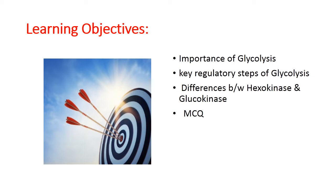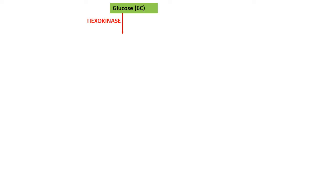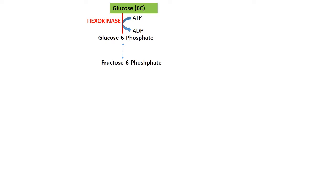Glycolysis also serves as a source of glycerol and carbon skeletons of non-essential amino acids. Now, the steps of glycolysis: in the first step, six-carbon glucose is phosphorylated to glucose-6-phosphate via the enzyme hexokinase. In this reaction, ATP is converted to ADP. In the next step, glucose-6-phosphate is converted to fructose-6-phosphate — glucose and fructose are functional isomers, one is aldose and the other is ketose.